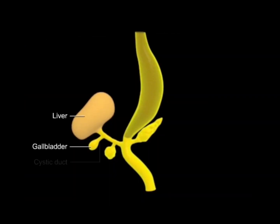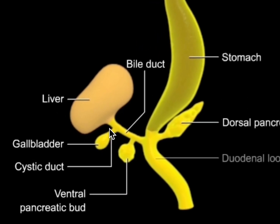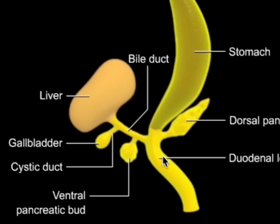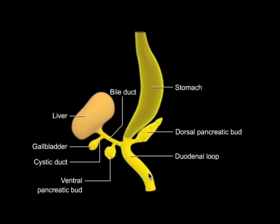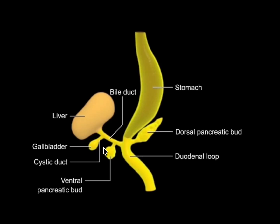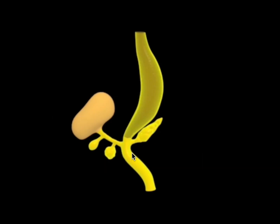The cystic duct joins the hepatic duct to form the bile duct, which connects the gallbladder and the liver to the developing duodenum. We can also see the two building blocks of the pancreas, also connected to the duodenum. During week five, the dorsal pancreatic bud emerges first and higher than the ventral pancreatic bud, both sandwiched between the layers of their corresponding mesogastrium.